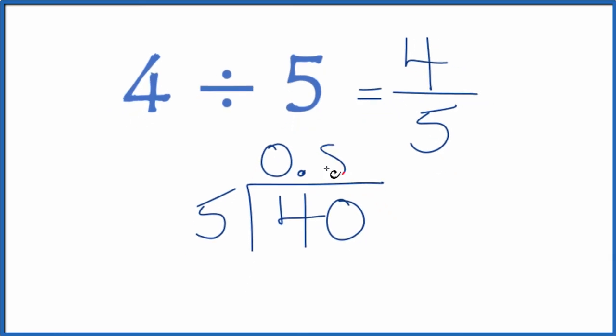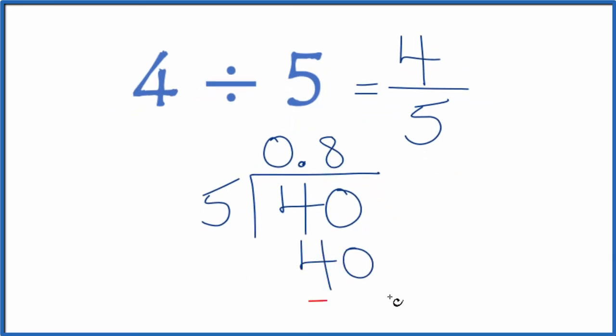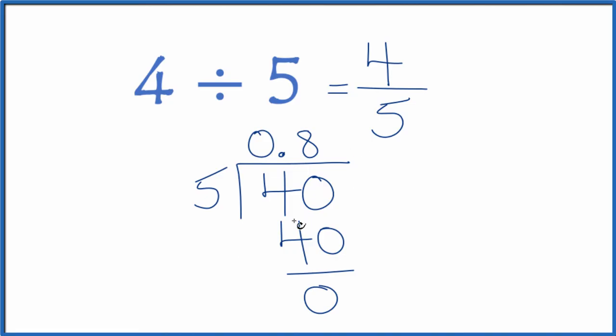Let's see, 8 times 5, that's 40, and there's no remainder. So when we divide 4 by 5, we get 0.8.